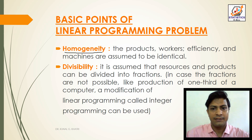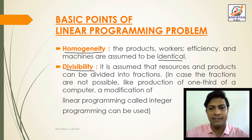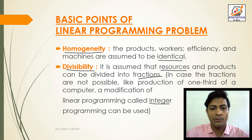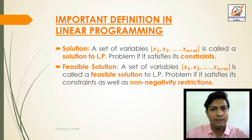Homogeneity means the product, workers' efficiency, and machines are assumed to be identical. Divisibility assumes that resources and products can be divided into fractions. In cases where fractions are not possible — like the production of one-third of a computer — a modification of linear programming called integer programming can be used.